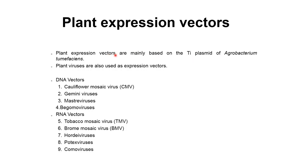Plant expression vectors are mainly based on the Ti plasmid of Agrobacterium tumefaciens. Plant viruses are also used as expression vectors. DNA vectors include Cauliflower Mosaic Virus (CaMV), Gemini virus, Mastrevirus, and Begomoviruses. RNA vectors include Tobacco Mosaic Virus (TMV), Brome Mosaic Virus (BMV), Hordei viruses, and Potex viruses.